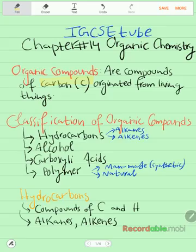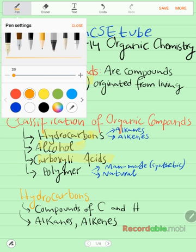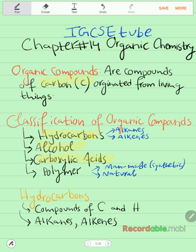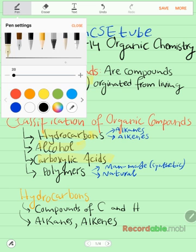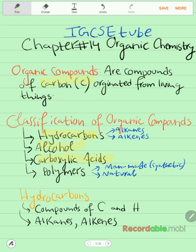Organic compounds are classified into four main groups, or at least there are four main groups that are within the scope of the syllabus that we will be discussing. The first is hydrocarbons, which are further classified into alkanes and alkenes. Second is alcohol. The third is carboxylic acids. And the fourth is polymers. Polymers are further classified into man-made or synthetic polymers and natural polymers. These four groups we will discuss in detail in this video and in the upcoming videos.